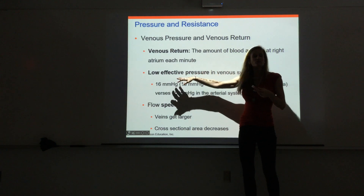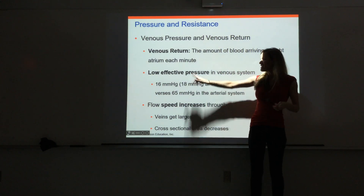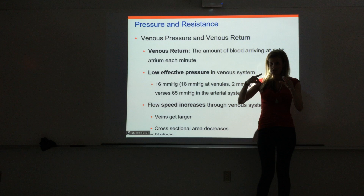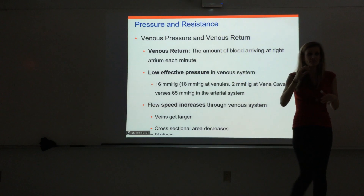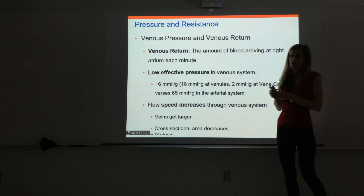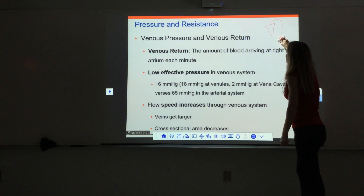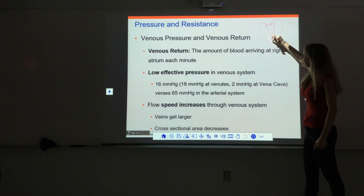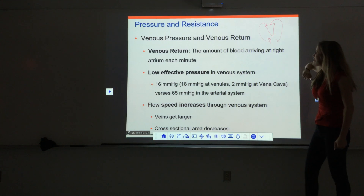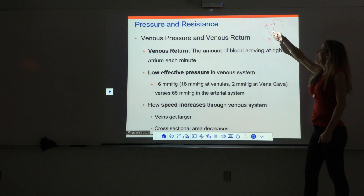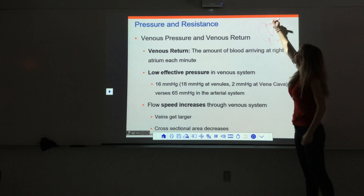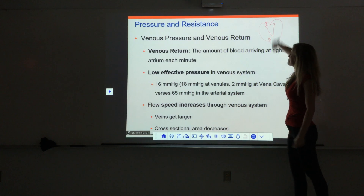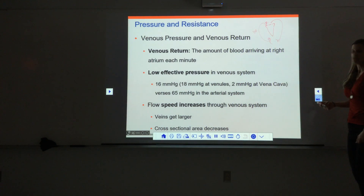Remember when we talked about the veins, we said there is a relatively low effective pressure in them. The effective pressure is just the pressure difference. The change in pressure in the venous system is relatively low — about 16 millimeters of mercury. The pressure at the venules at the very end of the capillary bed is about 18 mmHg, and up at the vena cava it's practically nothing — about 2 mmHg. So the change in pressure from the venules all the way back up to the heart is about 16 — a really low effective pressure.